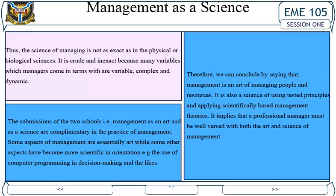The submissions of the two schools are that management as an art and as a science are complementary in the practice of management. Some aspects of management are essentially art, while other aspects have become more scientific — for example, the use of computer programming in decision-making. Therefore, we can conclude that management is an art of managing people and resources, and also a science of using tested principles and applying scientifically based management theories. A professional manager must be well versed in both the art and science of management.